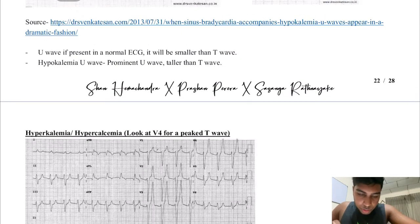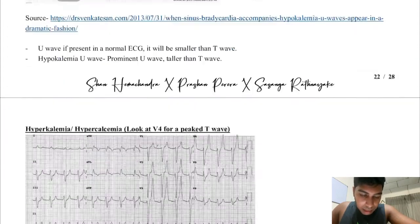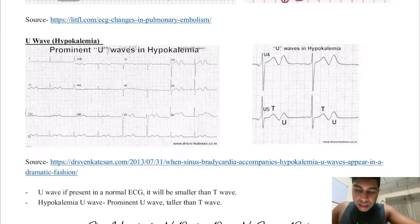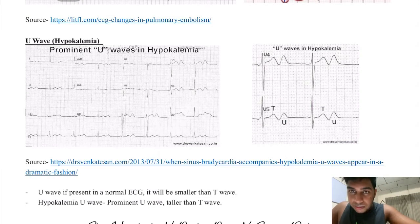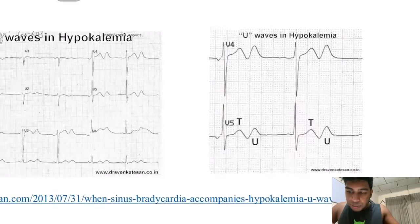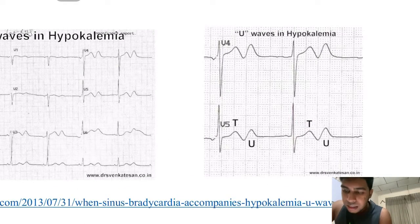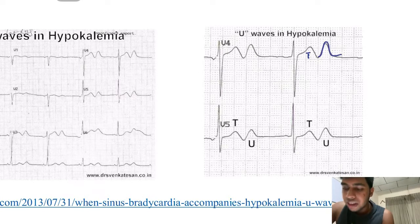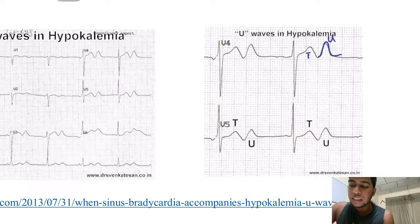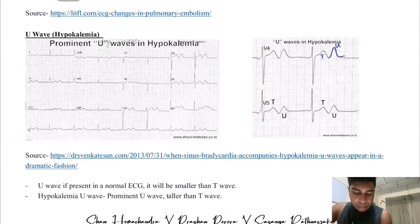Next we have U waves, which are seen in hypokalemia. A U wave can be normal, but if it is taller than the T wave — P, Q, R, S, T, U — then it indicates a condition of hypokalemia.